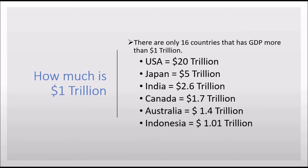In the world, there are only 16 countries that have their annual GDP more than 1 trillion dollars. For example, I have written here some countries with their GDP. The US has the highest GDP of 20 trillion dollars. Similarly, Japan has 5 trillion dollars, and India has 2.6 trillion dollars.